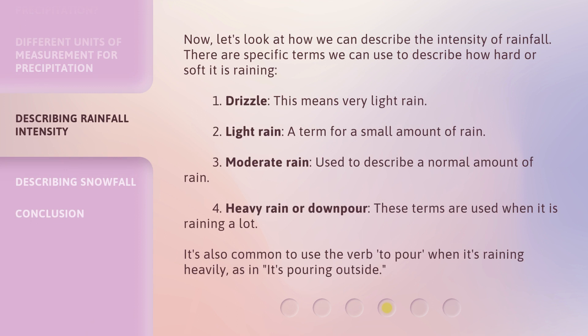Now, let's look at how we can describe the intensity of rainfall. There are specific terms we can use to describe how hard or soft it is raining. It's also common to use the verb "to pour" when it's raining heavily, as in, "It's pouring outside."